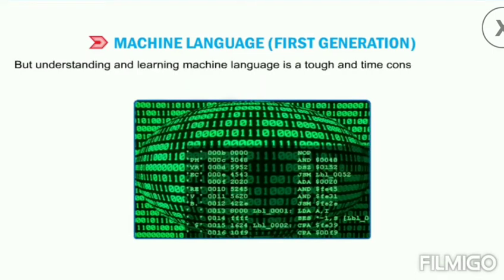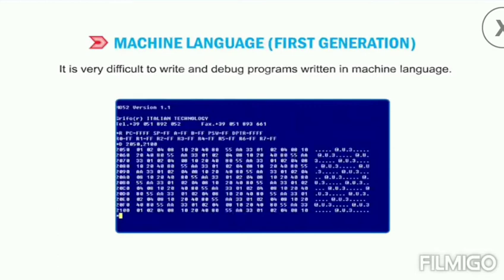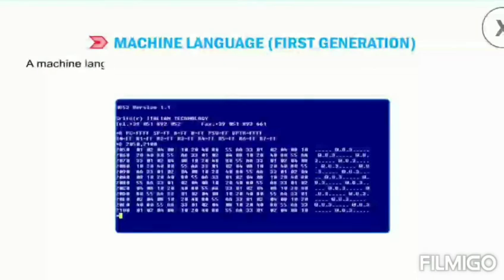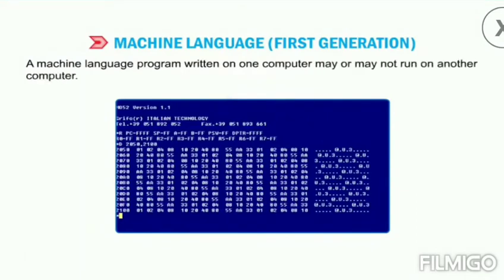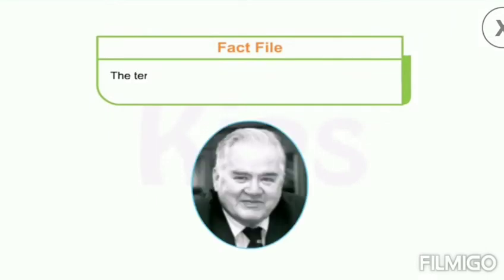However, understanding and learning machine language is a tough and time-consuming process. It is very difficult to write and debug programs written in machine language. Programs written in machine language are machine dependent, which is why machine language is also regarded as a low-level language (LLL). A machine language program written on one computer may or may not run on another computer, so very few people opt for specialization in machine language.